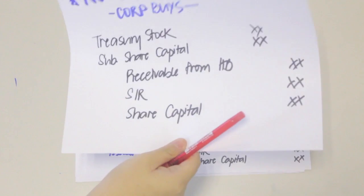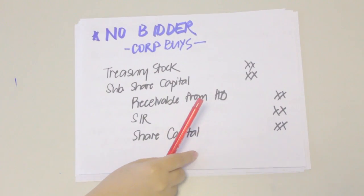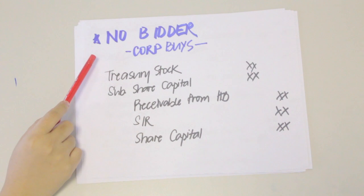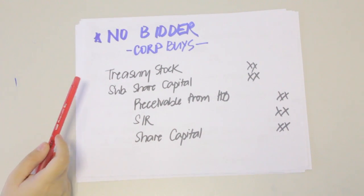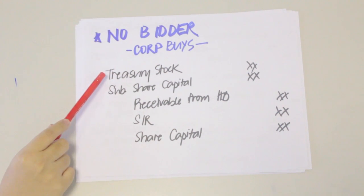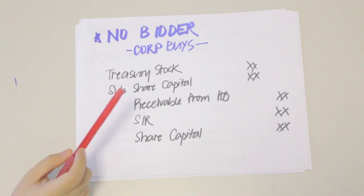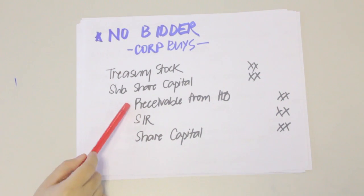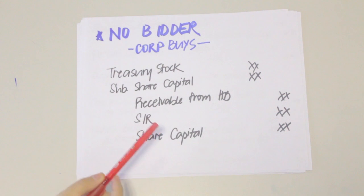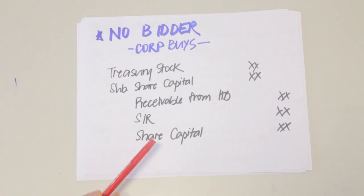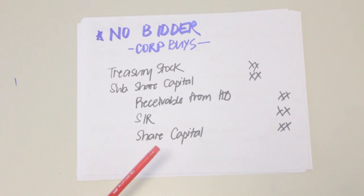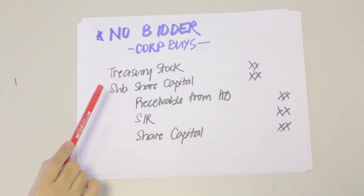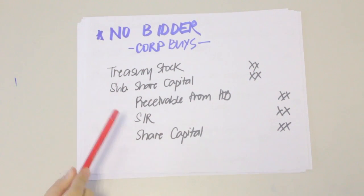That is the entry when there is a highest bidder. If there is no bidder, the corporation acquires the stocks. The entry would be: debit Treasury Stock, debit Subscribed Share Capital, credit Receivable from Highest Bidder, credit Subscriptions Receivable, and credit Share Capital. Even though there is no bidder, there is still an issuance of the stock — now held as treasury shares.